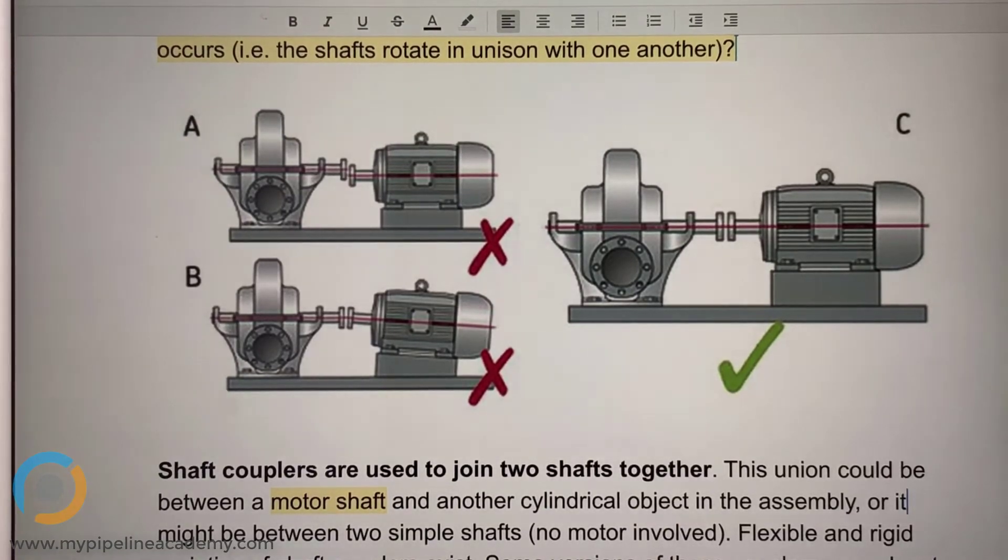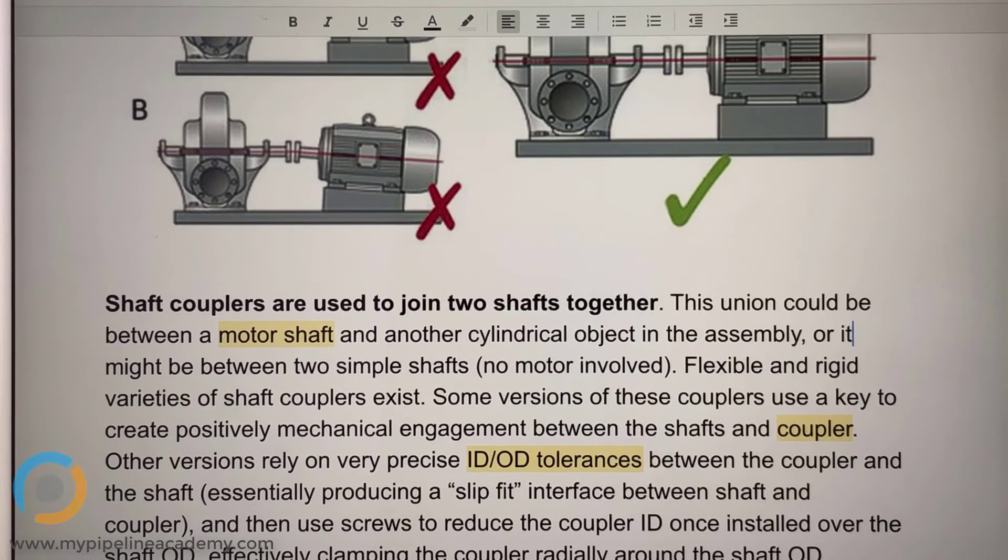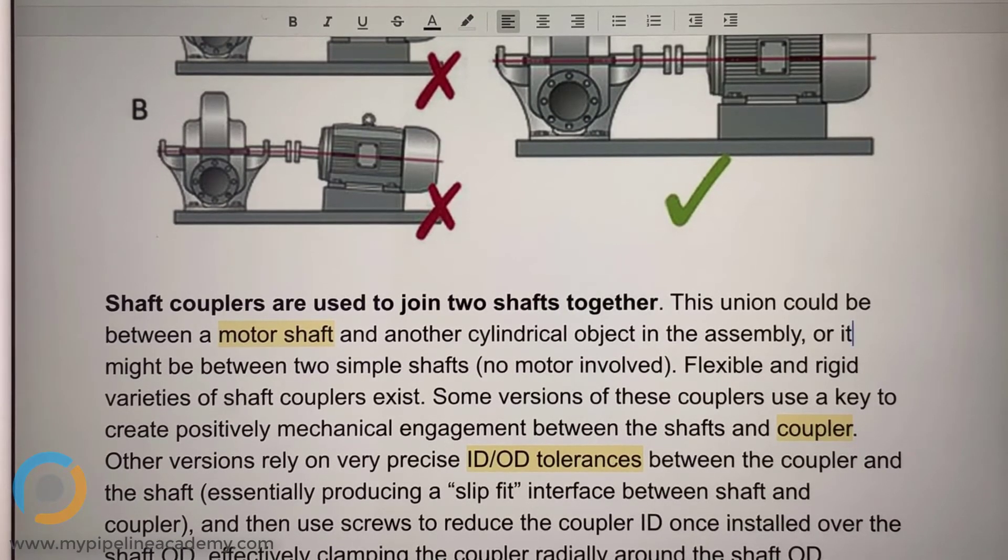And coupler. A coupler is something that joins two parts together. It couples them together. Okay. Makes sense. Let's call it a shaft coupler now.